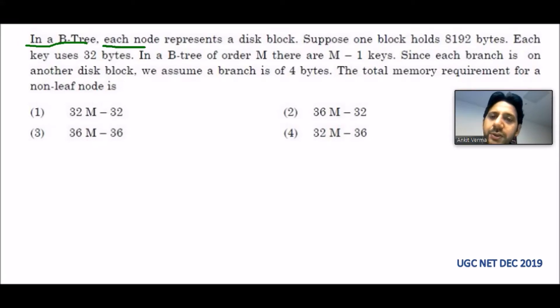In a B-tree, each node represents a disk block. Suppose one block holds 8192 bytes.